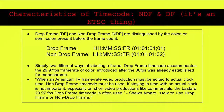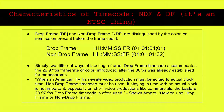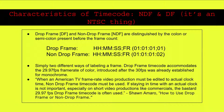Drop frame and non-drop frame are distinguished by a colon or semi-colon before the frame count — they are two different ways of labeling a frame. Drop frame accommodates the 29.97 fps frame rate of color video in NTSC, introduced after 30 fps was already established for monochrome. As Shauna Morrow summarizes: when American TV frame rate video production must be edited to actual clock time, non-drop frame time code must be used. If staying in time with an actual clock is not important, especially on short productions like commercials, the 29.97 fps is often used.